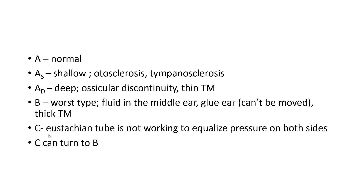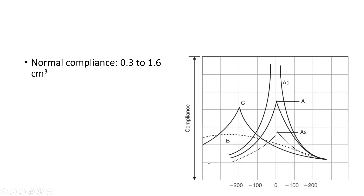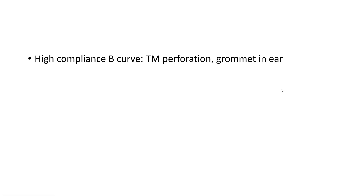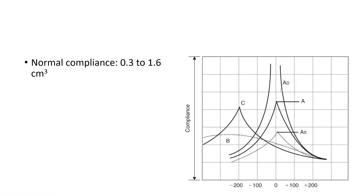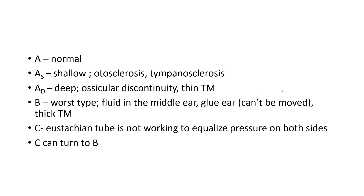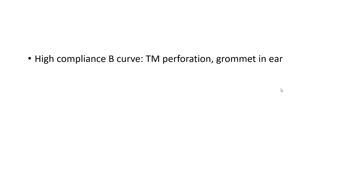Another thing to remember is that type C can turn into type B. At first the middle ear pressure becomes negative, and in later stages transudation occurs and fluid starts accumulating in the middle ear. Type B curve is a low flat curve — no amount of pressure change transmits sound. But there is also a high B curve, which is flat but higher in compliance. We get that kind of curve when there is perforation in the tympanic membrane or a grommet insertion in the ear. So these are the different types of curves seen in tympanometry — likely to see one of them in your clinical exam. Thank you.